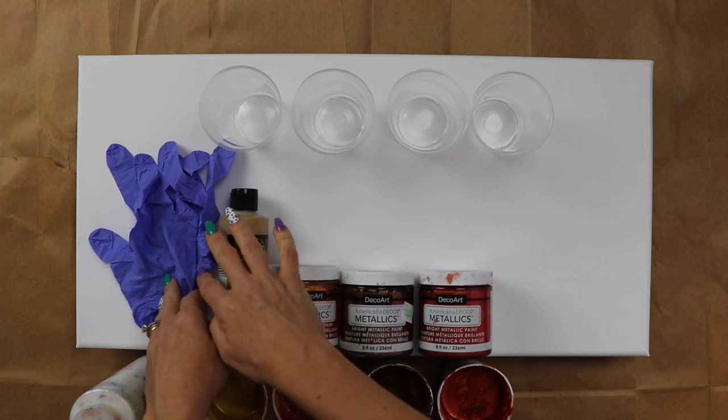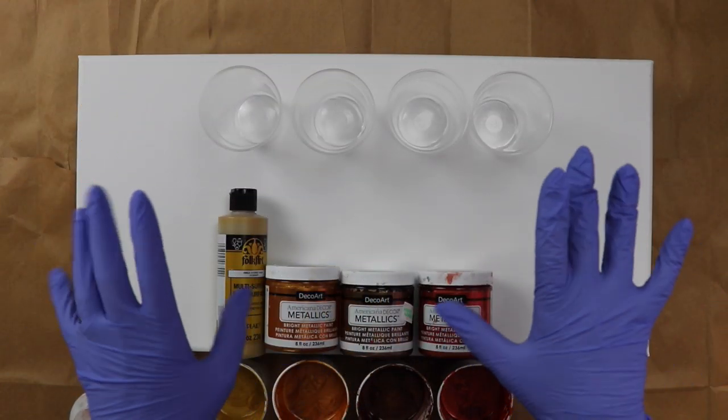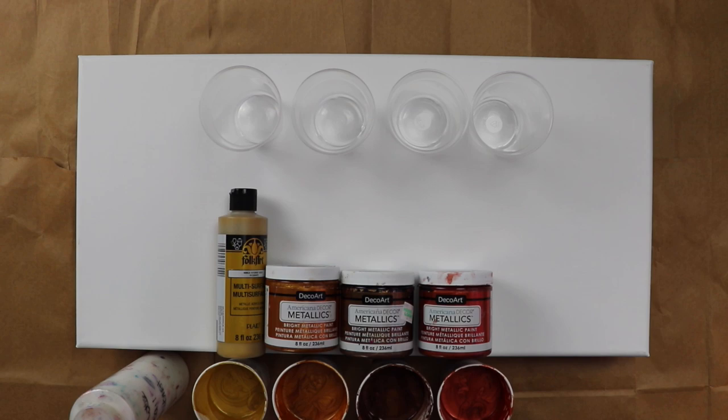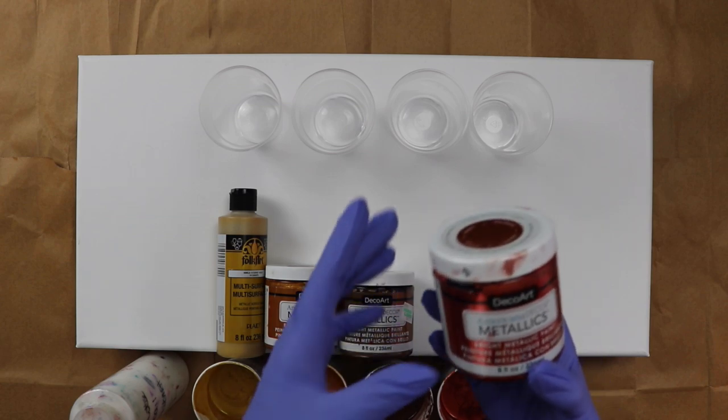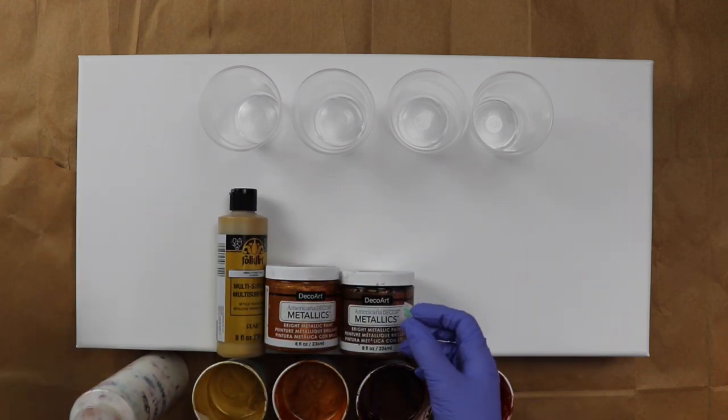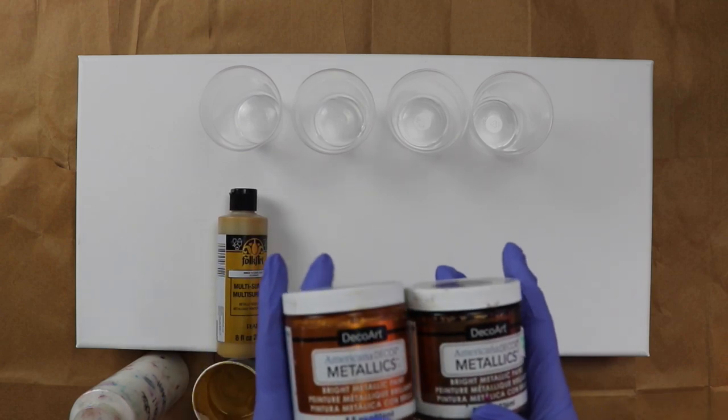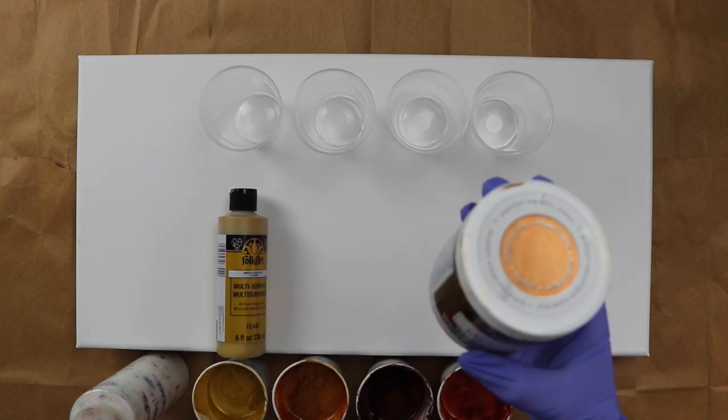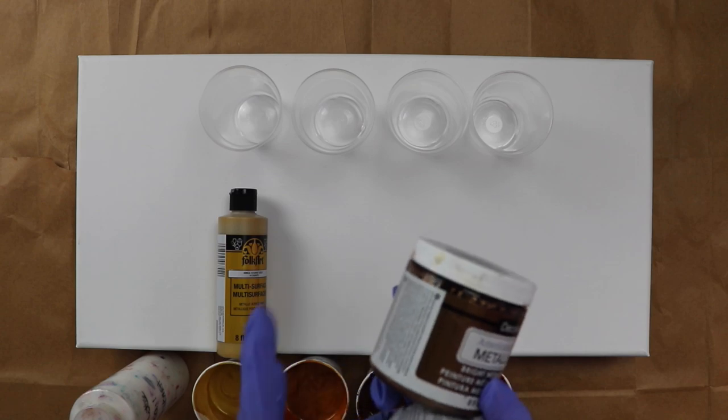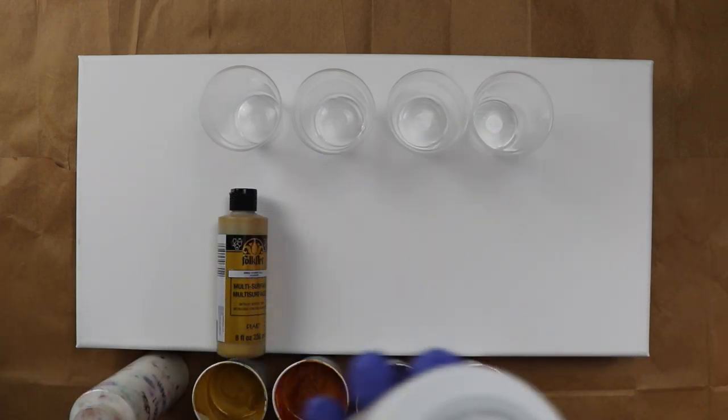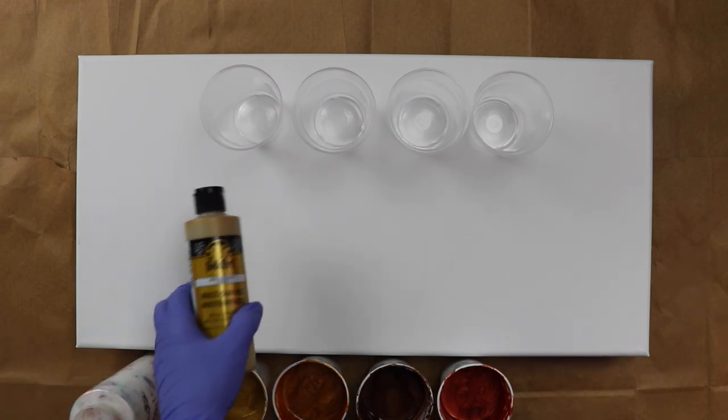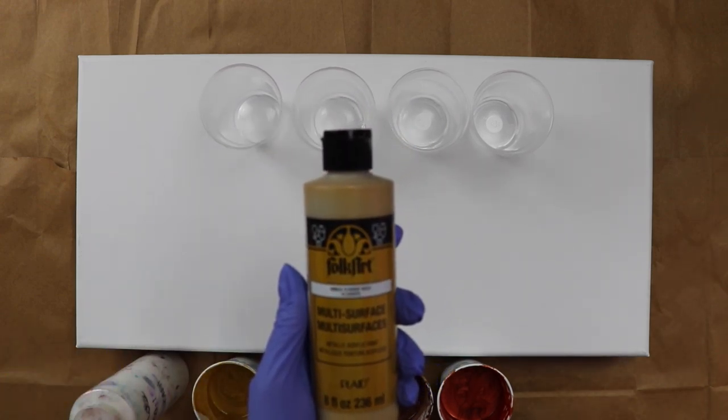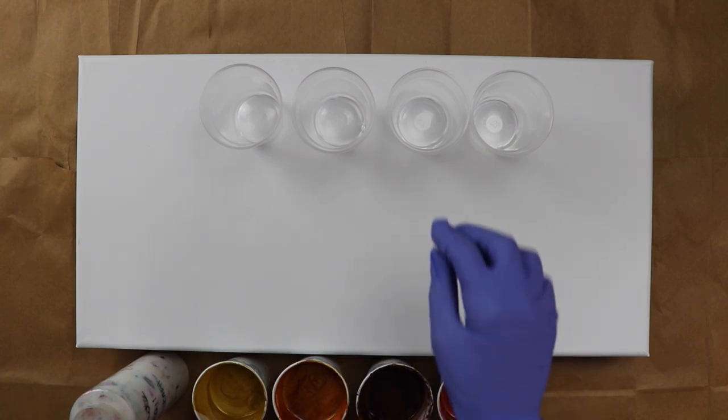I'm going to get my gloves on and get started. Okay guys, I've got my gloves on and I wanted to show you the colors. I've got Copper from DecoArt Americana Decor Metallics. These two are also from DecoArt: Antique Bronze and regular Bronze. This Bronze is my absolute favorite. Then I have 14 Karat Gold from Folk Art.